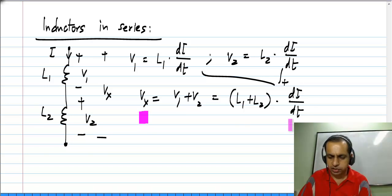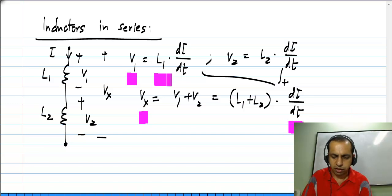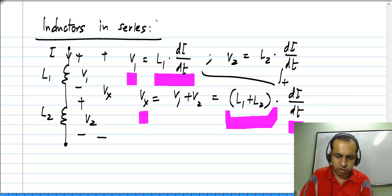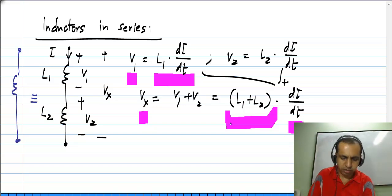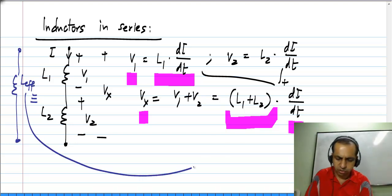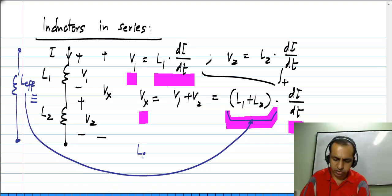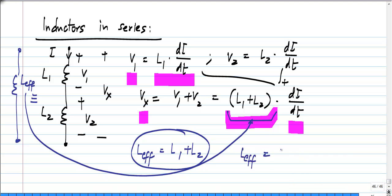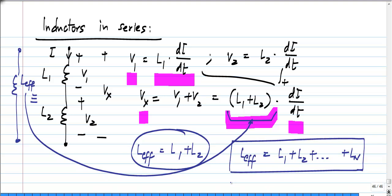Again, the relationship between Vx and the current I looks exactly similar to that of a single inductor. The only different thing is the proportionality constant in front of the time derivative of the current. So, clearly from the nature of this relationship we deduce that the series combination is equivalent to an inductor, and the value of the effective inductor L_effective is given by the sum of individual inductors. For N inductors in series, the combination is equivalent to a single inductor whose value is L1 plus L2 plus ... plus Ln.